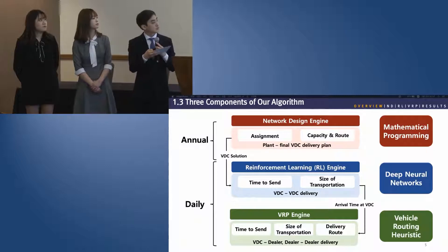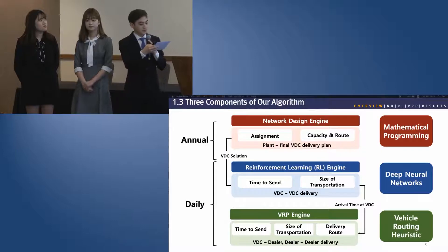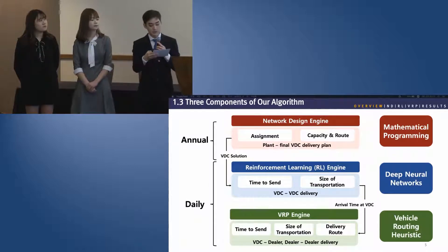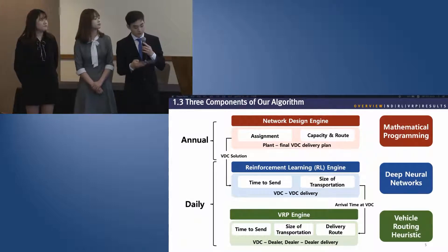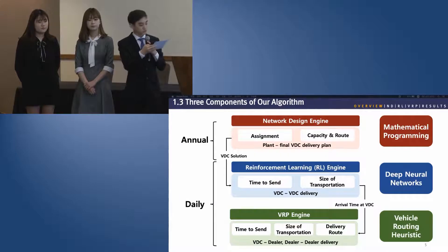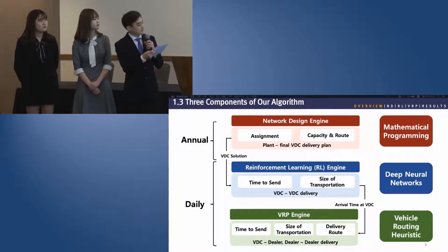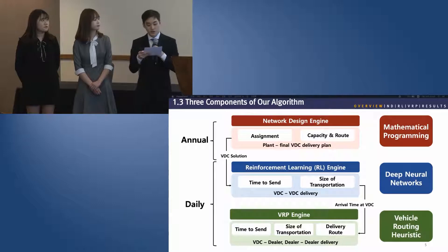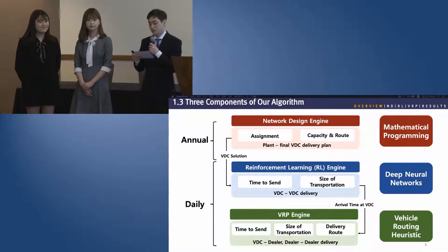When we first look at tackling this process, we divide it into three sections. The first is the network design engine, which makes decisions on adjusting capacity of VDC and delivery process from plant to dealer using mathematical programming. Next, in the reinforcement learning engine, we decide whether to shift vehicles from VDC to the next VDC with a trained model using a deep neural network. Finally, the VRP engine gives us a delivery route from the final VDC to the dealer. I'd like to hand over to Moon Jung, who will explain the network design engine.